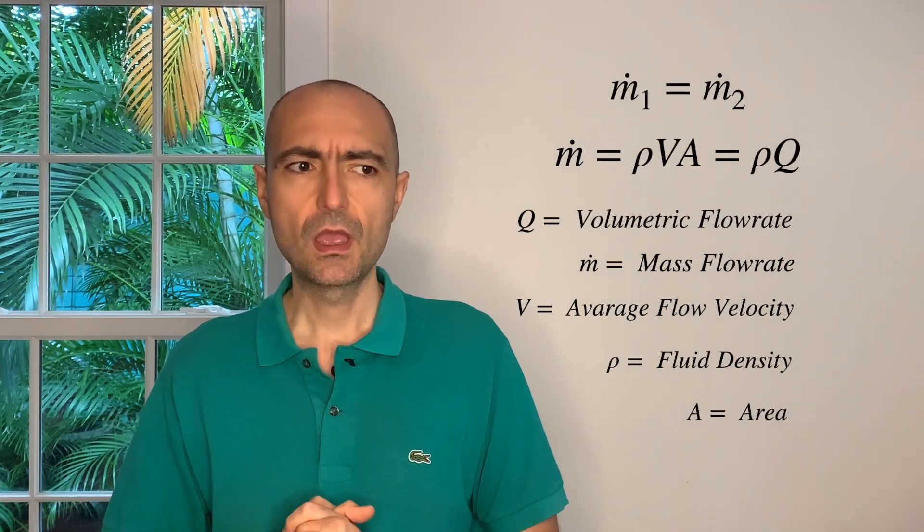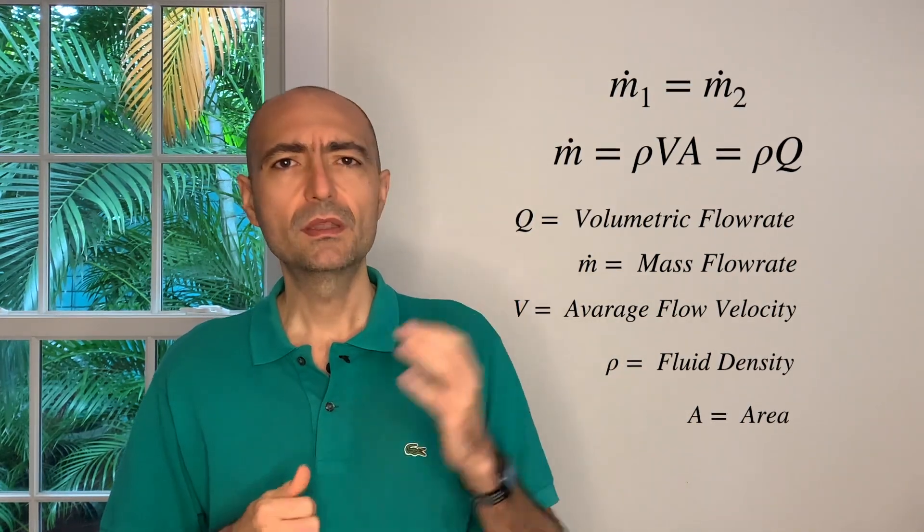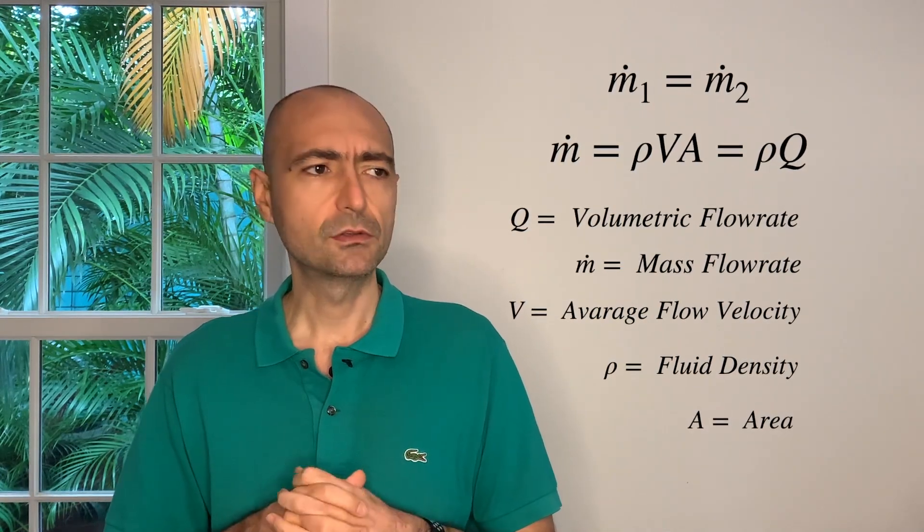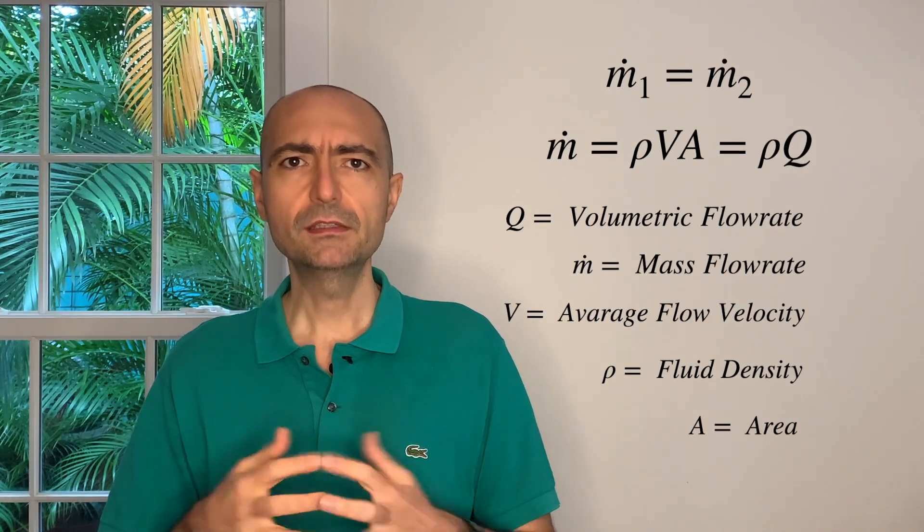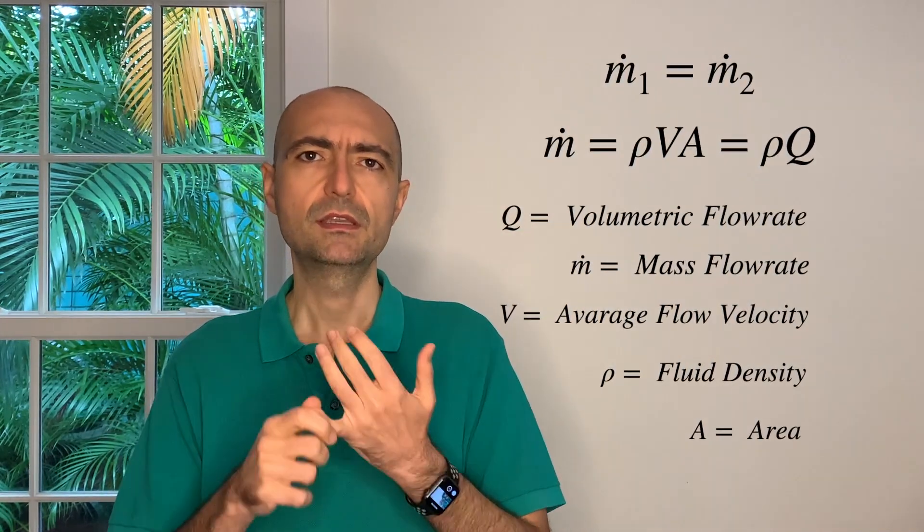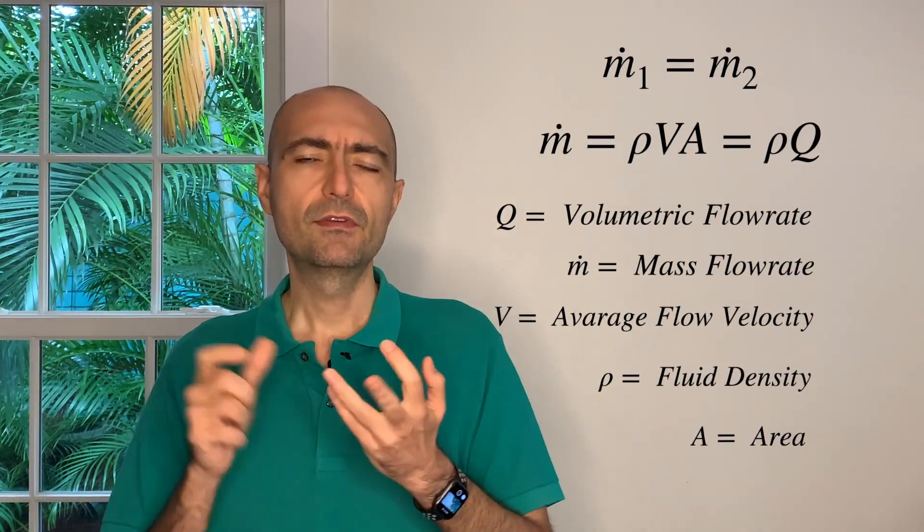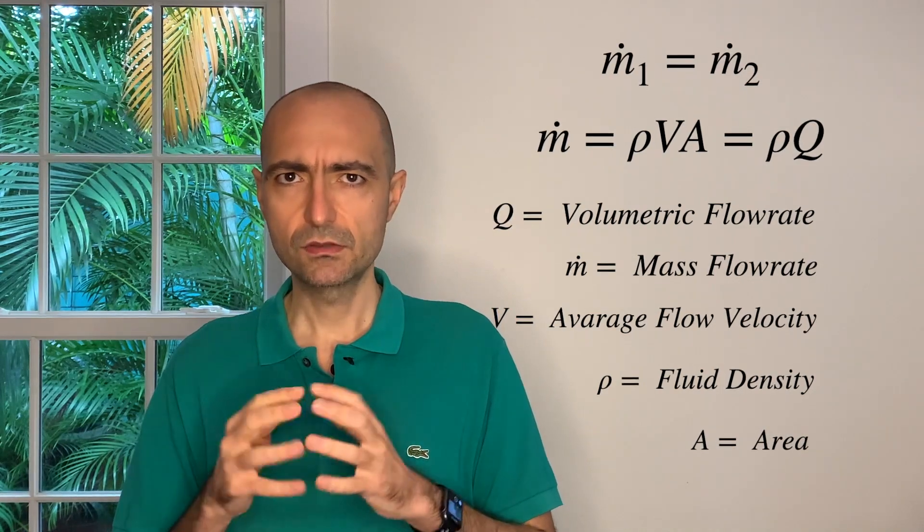The first and easiest is the conservation of mass, also known as the continuity equation. Basically what it says is m_dot_1 equals m_dot_2. This is from your reference manual. m_dot is called mass flow rate and that is obtained by having density times velocity times area: m_dot = ρVA.